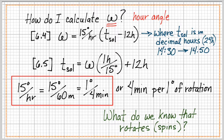And 6.3, if I were solving for T sol, I would take the hour angle, then multiply that by 1 hour per 15 degrees, flipping the units around, plus 12 hours to make the correction for hour angle.